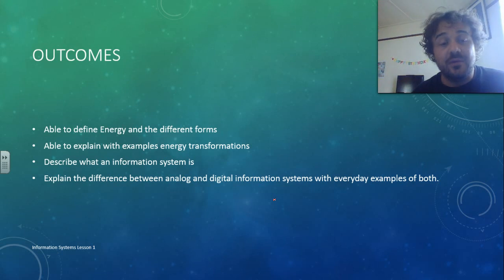So what we want to do is by the end of this, you should be able to do these things: define energy in different forms, explain with examples what an energy transformation is, describe what an information system is, explain the difference between analog and digital systems with everyday examples of both, and hopefully by the end you can use a QR code.